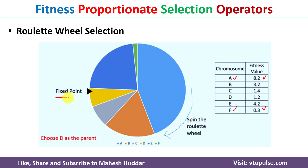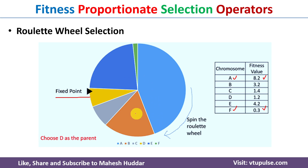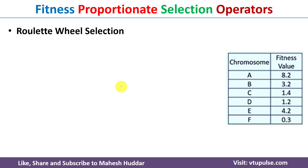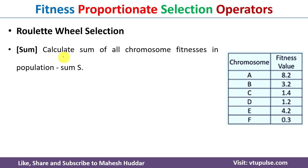A fixed point is assigned on the roulette wheel. We rotate the wheel and after it stops, wherever the fixed point is pointing, that parent is selected for reproduction. If we want to select multiple parents, we repeat the same process — rotate the wheel again and wherever the fixed point lands at the end of that rotation, that chromosome is selected as the parent.